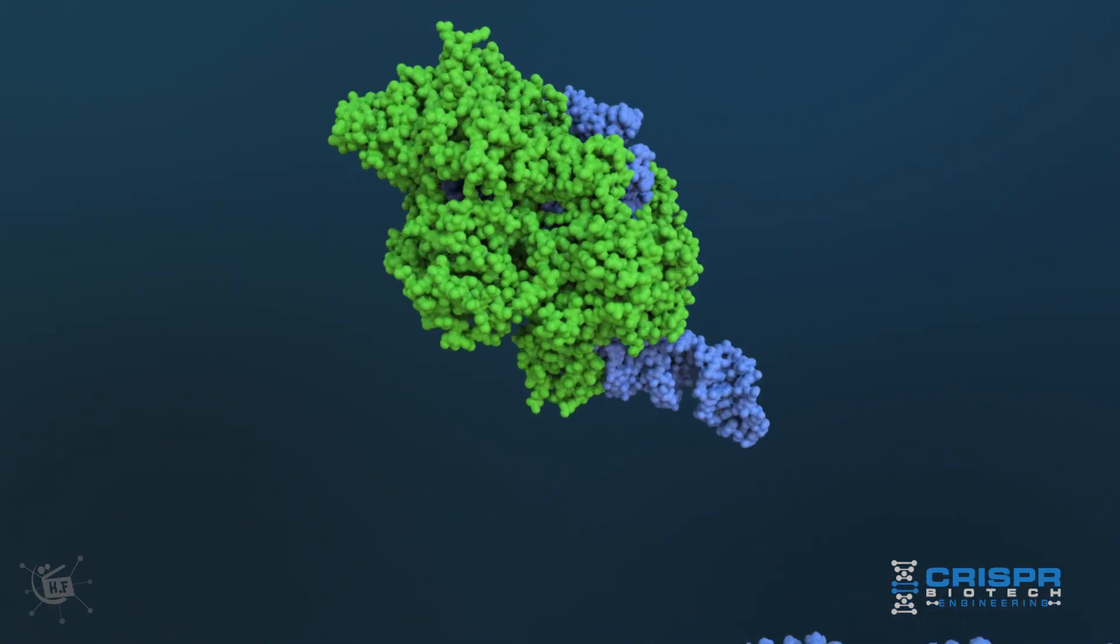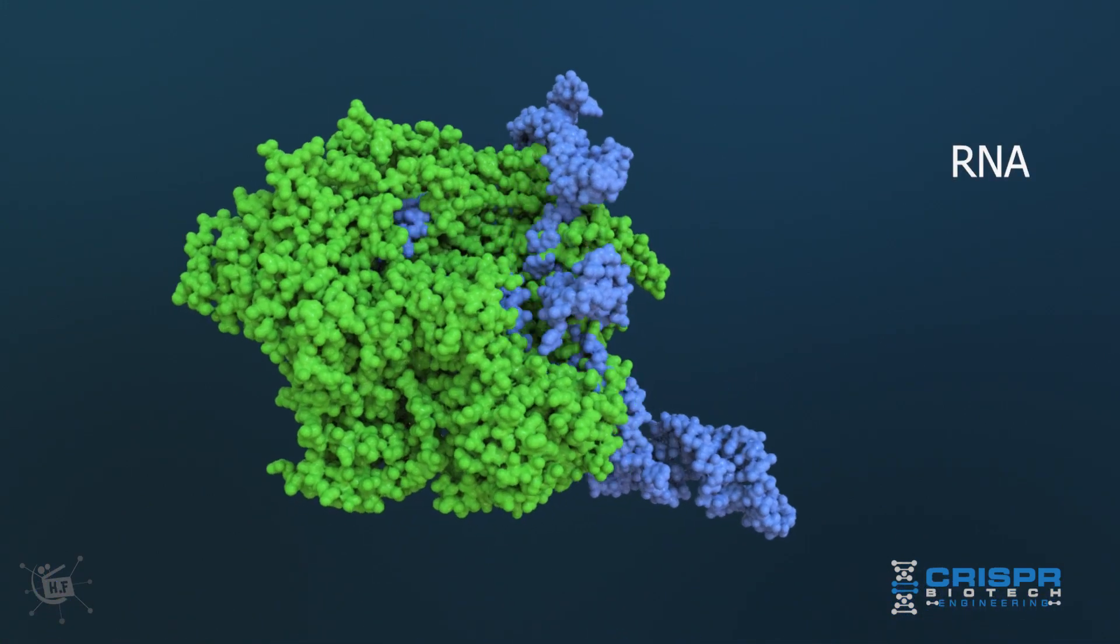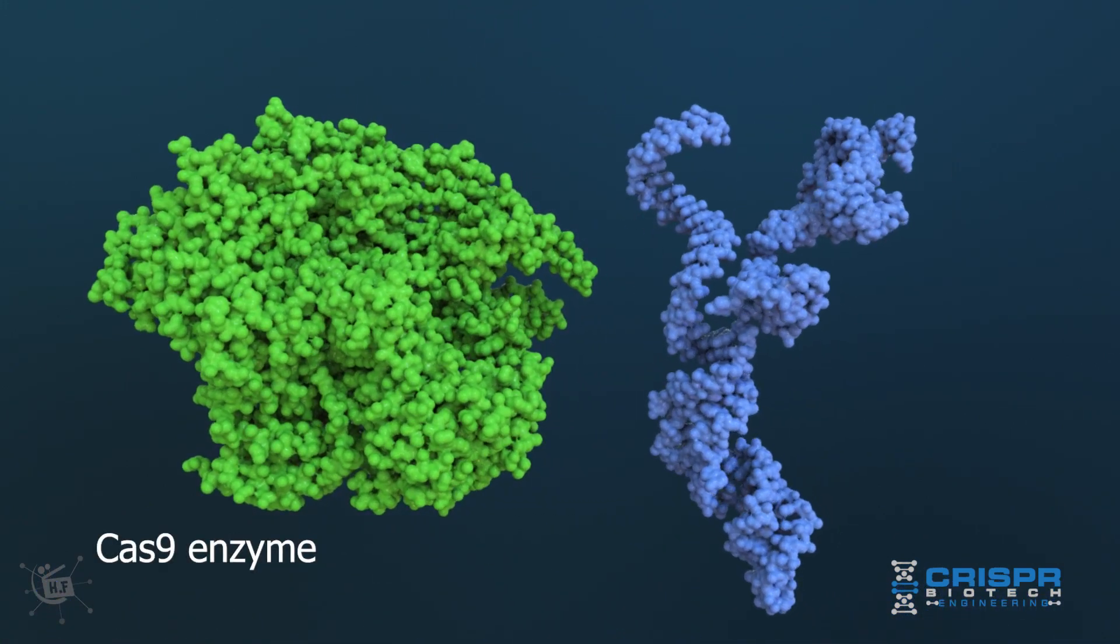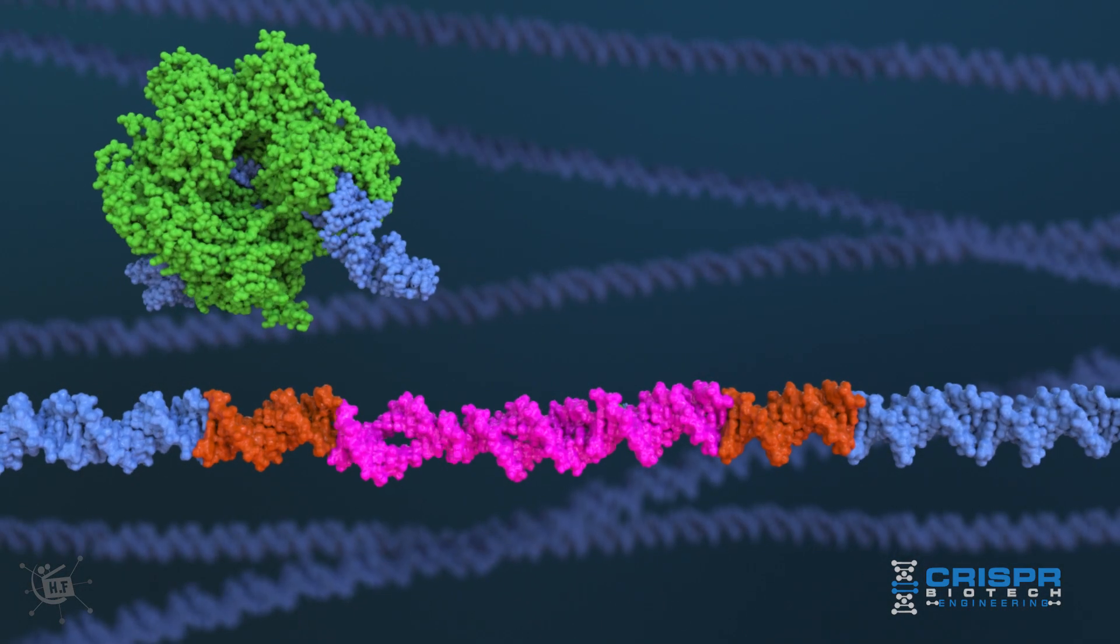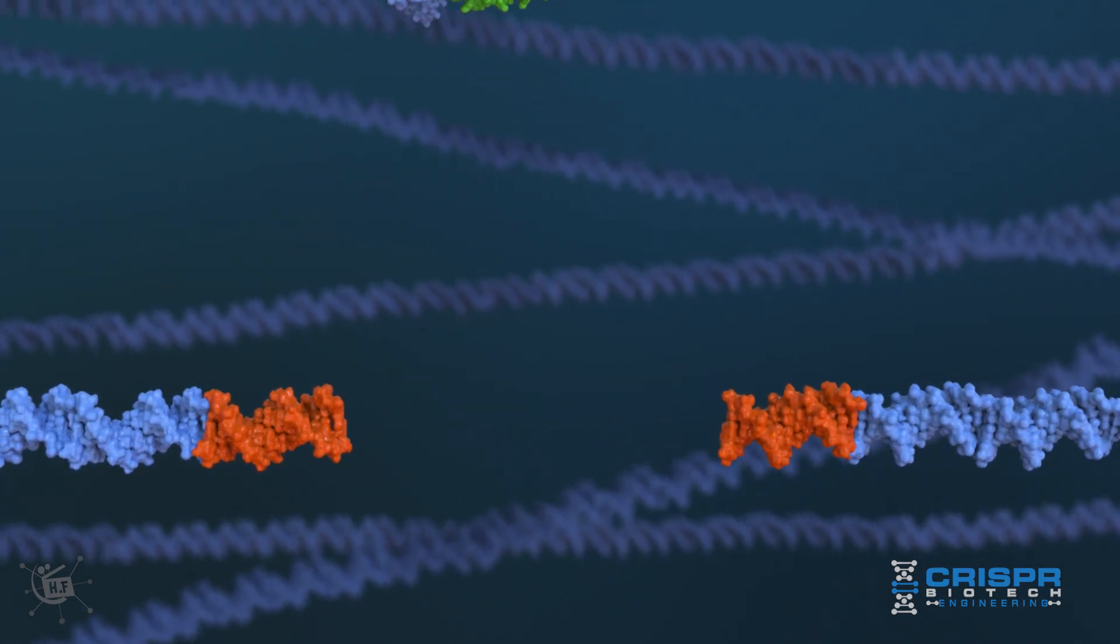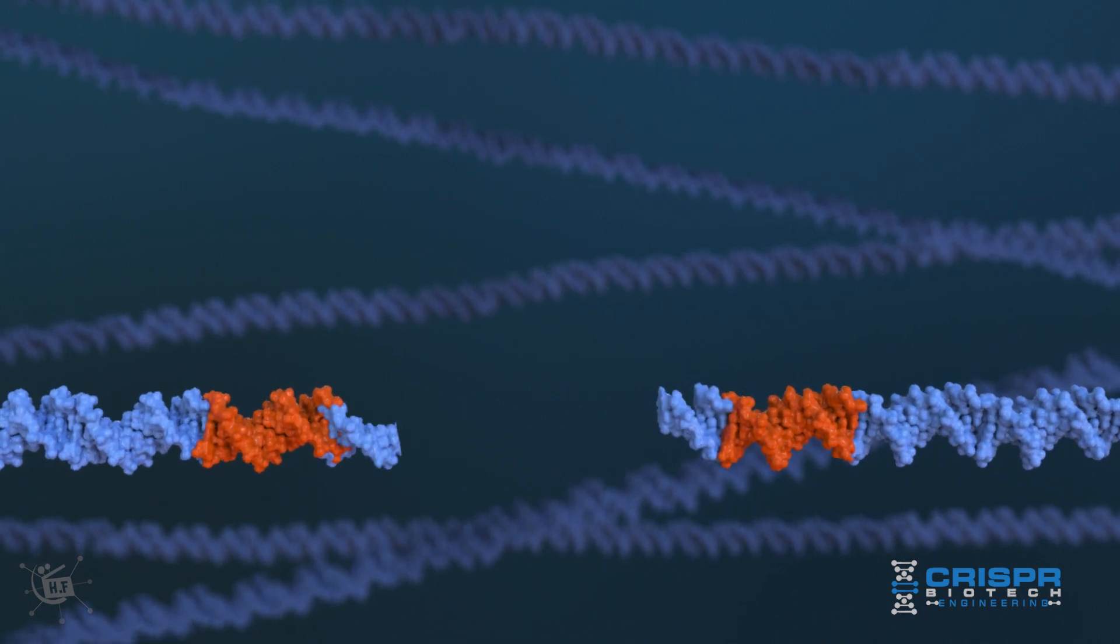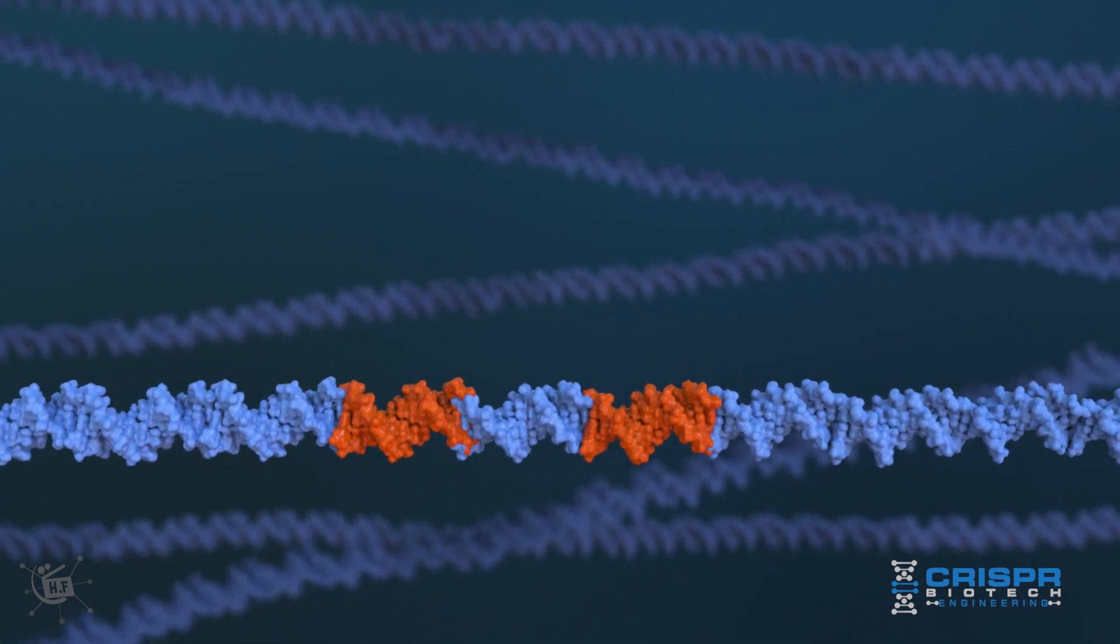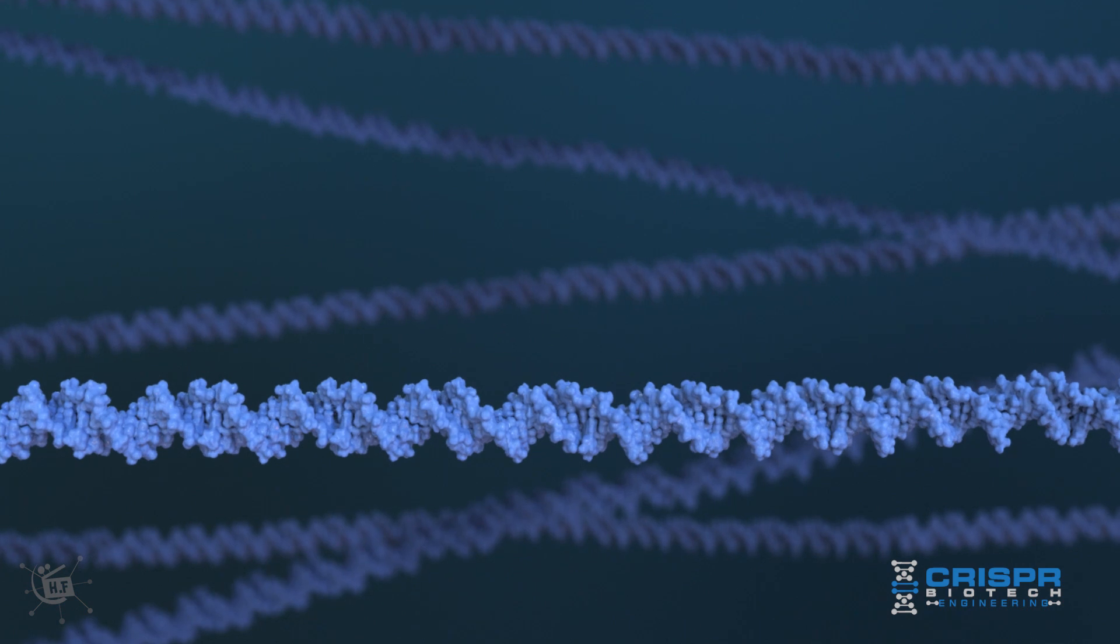The system works with the interaction of two parts: a guide RNA and the Cas9 enzyme. When one cut occurs, the process of non-homologous end-joining may lead to an addition or base pairs deletion to disrupt the existing unique DNA sequence and cause inactivation of the gene.